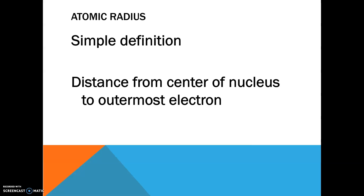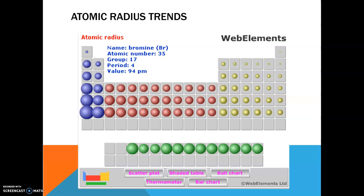Now find the section where we talked about atomic radius. The simple definition is: the atomic radius is the distance from the center of the atom to the outermost electron. I gave you a chart — something similar to this one — where you could see how the atomic radius changed on the periodic table.